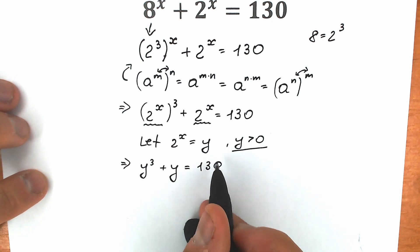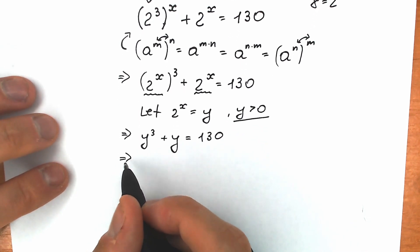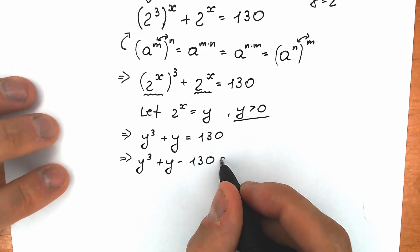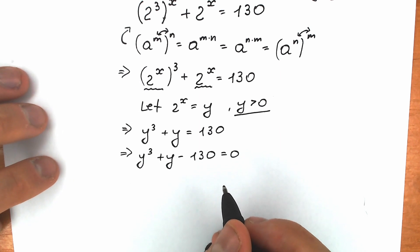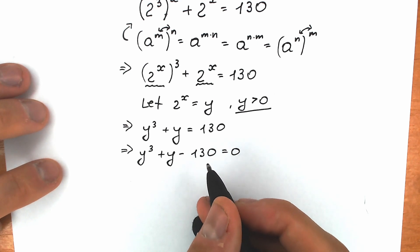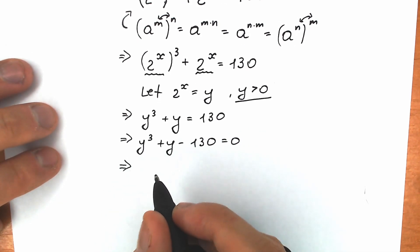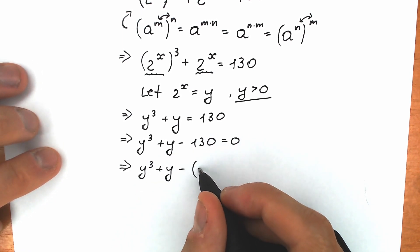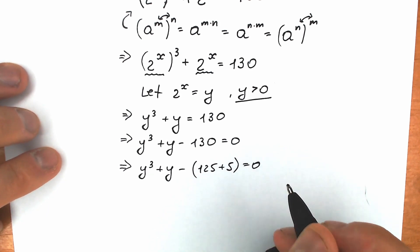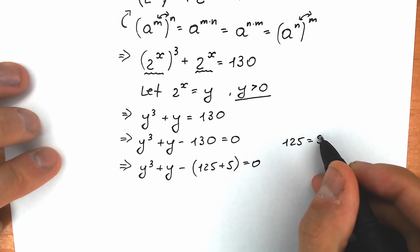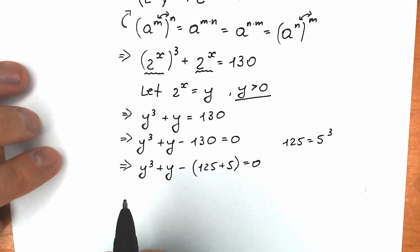We no longer have an exponential equation — we have a cubic equation. Let's bring 130 to the left side: y cubed plus y minus 130 equals 0. Now, let's write 130 as 125 plus 5. It changes nothing, but it helps us, because 125 equals 5 cubed. So we have y cubed plus y minus 5 cubed minus 5 equals 0.